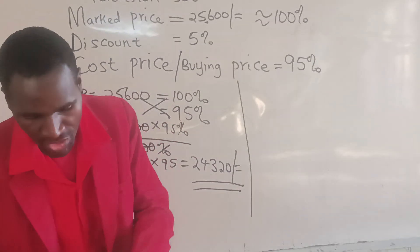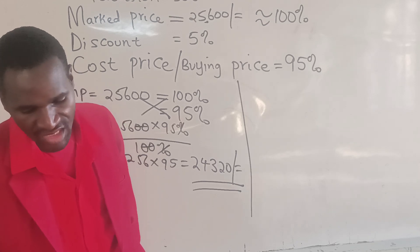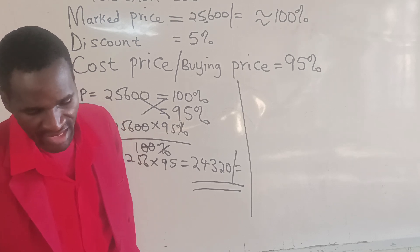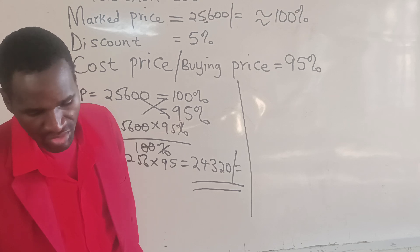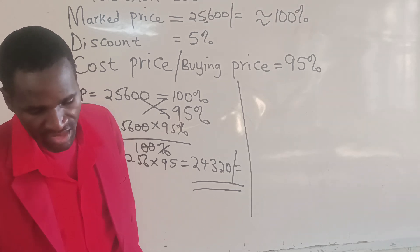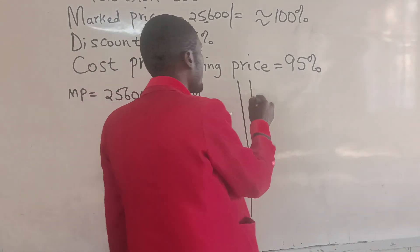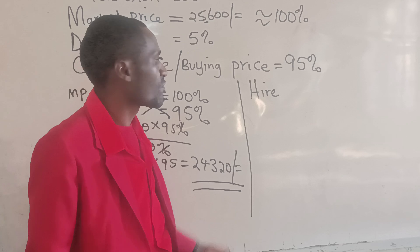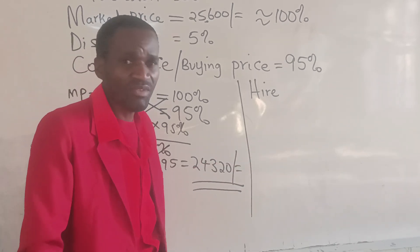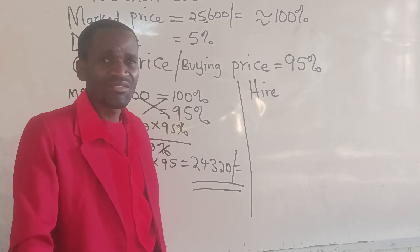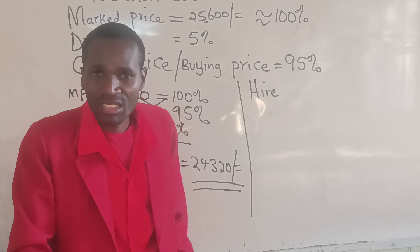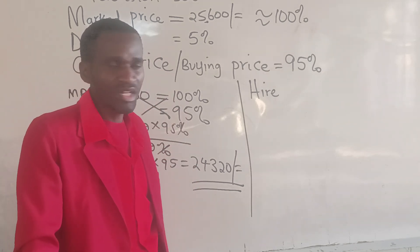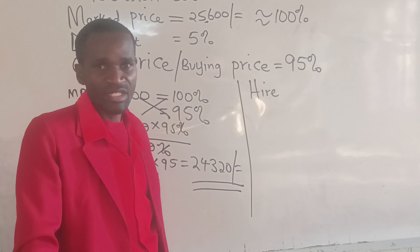Let's get back to the question. The TV can also be bought on hire purchase terms by paying a deposit of 12,640 Kenyan shillings and 16 equal monthly installments of 1,450 Kenyan shillings. Hire purchase is used when an individual needs a particular item or service but does not have enough money to purchase it outright. They resort to hire purchase terms.